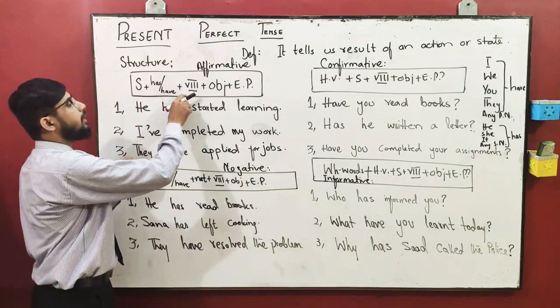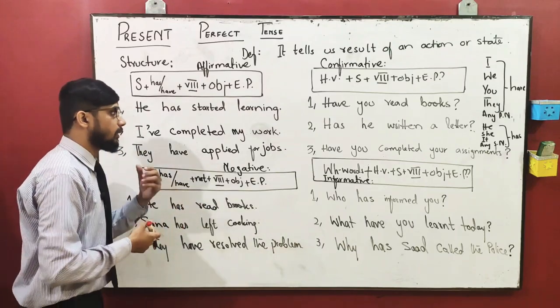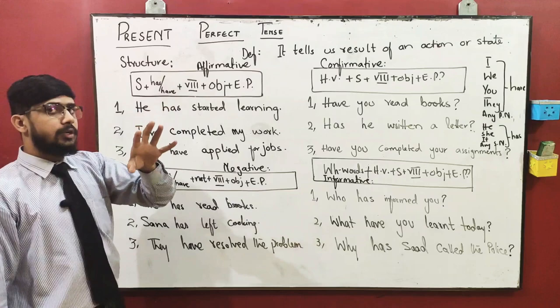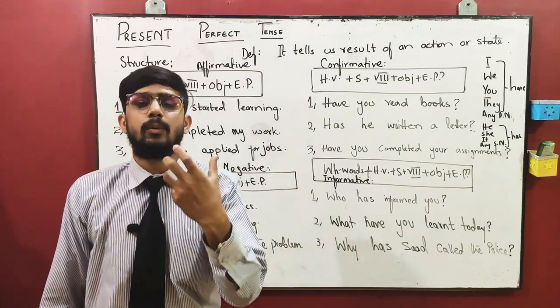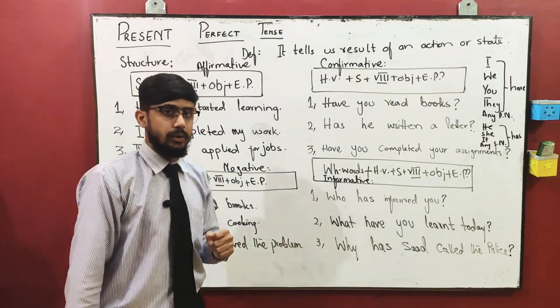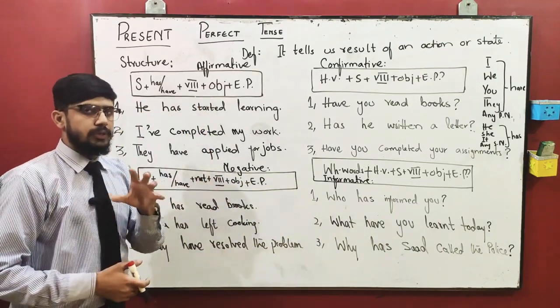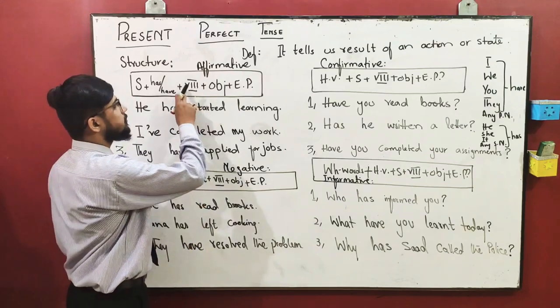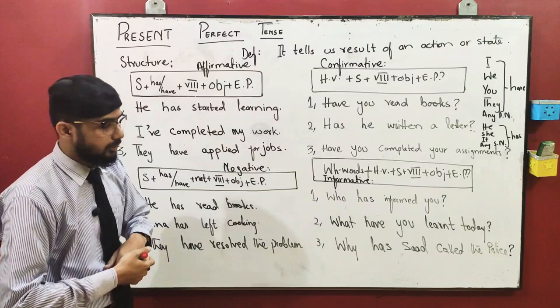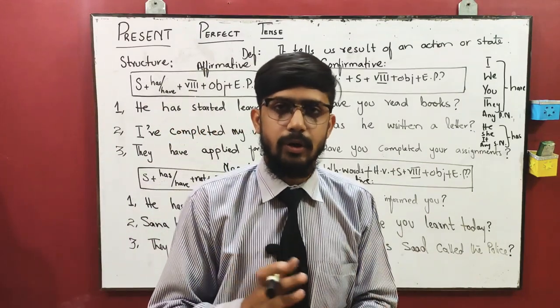Has and have plus verb third form, which you can also call V3. Verb third form means you use the third form of the verb, which you also call past participle form. Then afterwards, the object you know, as usual object we use, and the last is EP - extension of predicate, extra part of sentence.